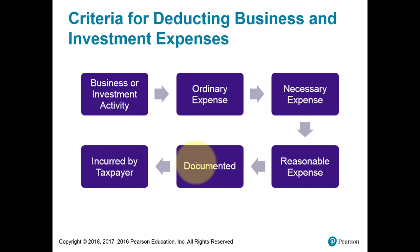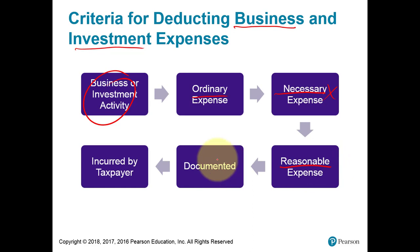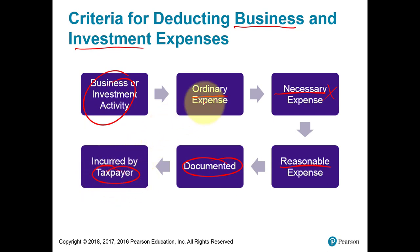One of the categories we mentioned is trade or business deductions versus investment expenses. To be claimed as trade or business expenses, the expense has to be ordinary, has to be necessary — the tax definition is different from the dictionary definition — has to be reasonable, and has to be recorded and documented so that in case you're audited you can prove you incurred all of these expenses. And it has to be incurred by the taxpayer.